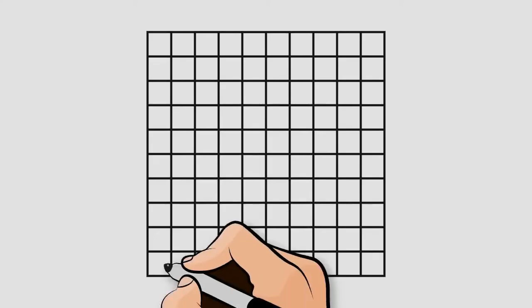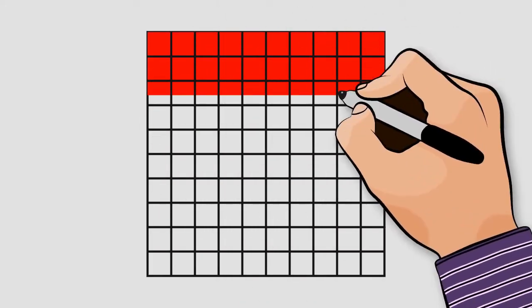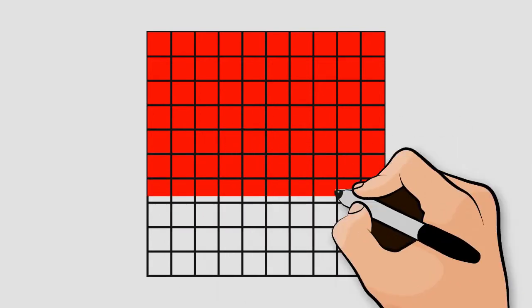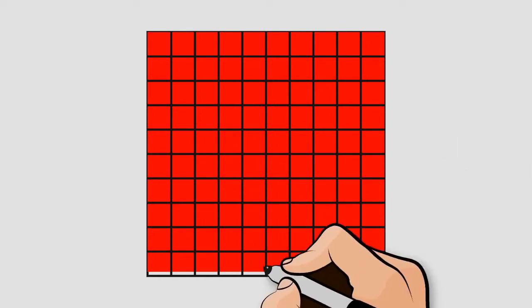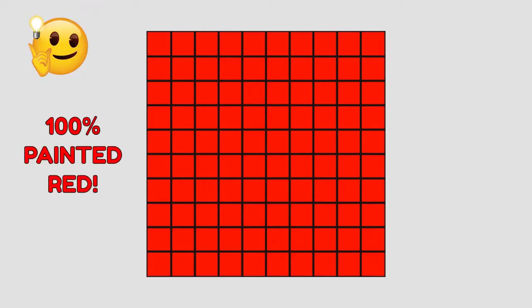Now imagine that we paint all the 100 little squares. What percentage of little squares are painted? That's right — 100%.